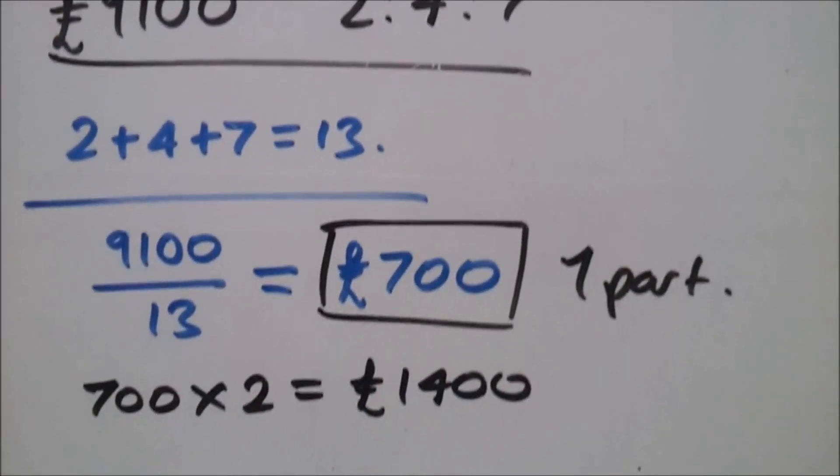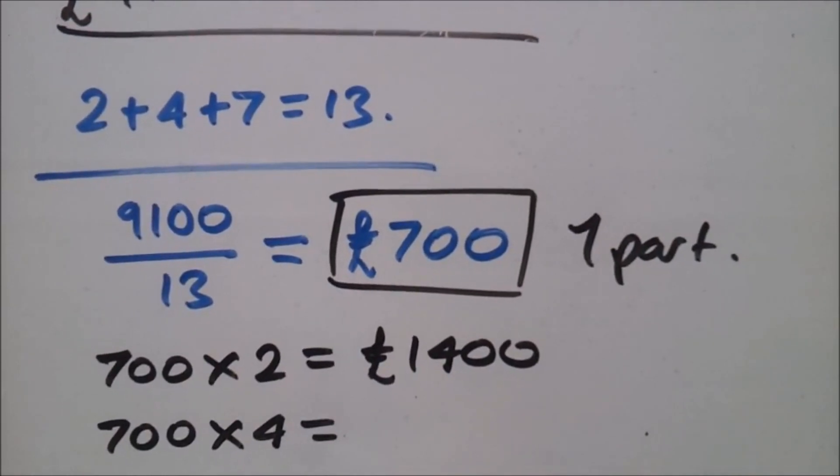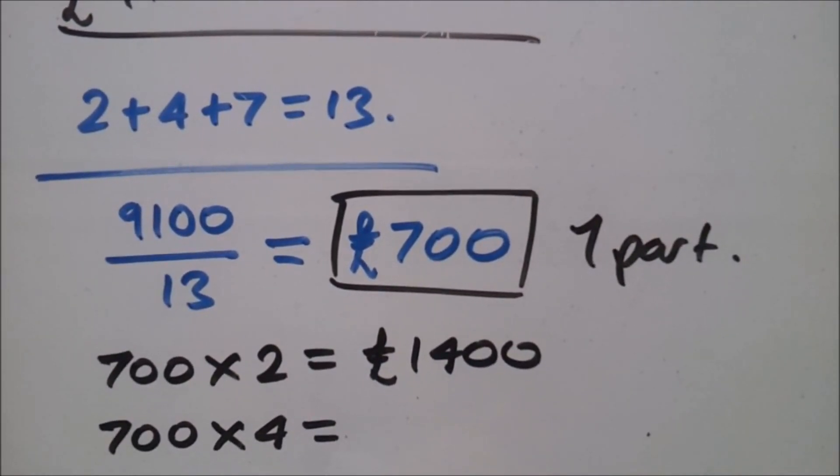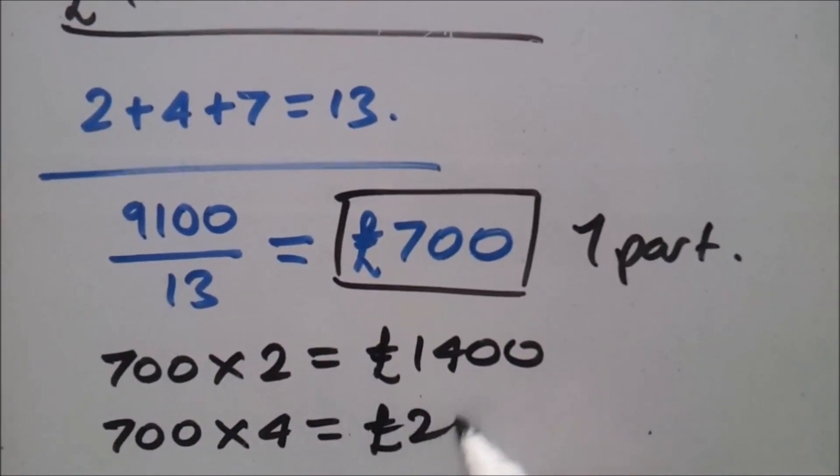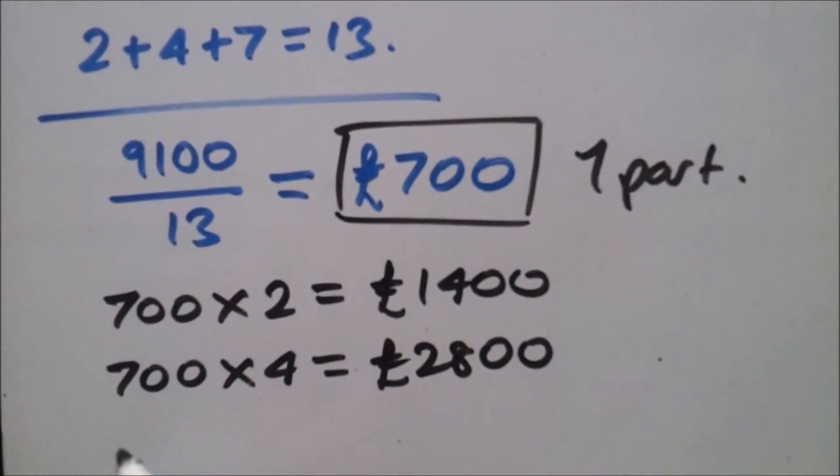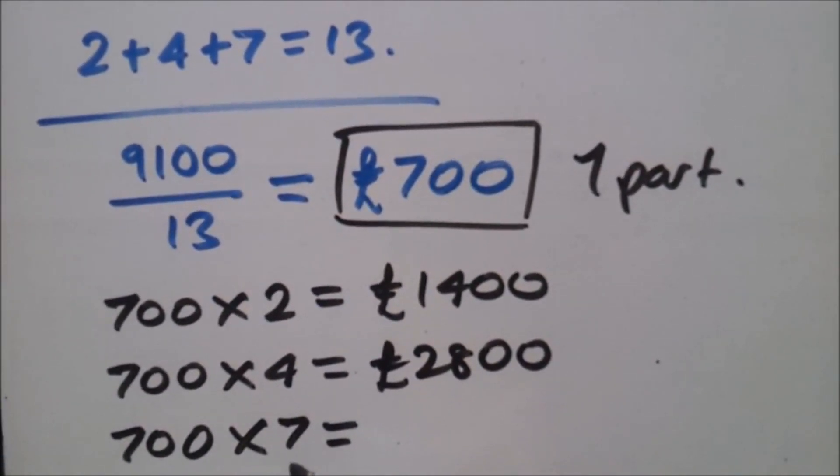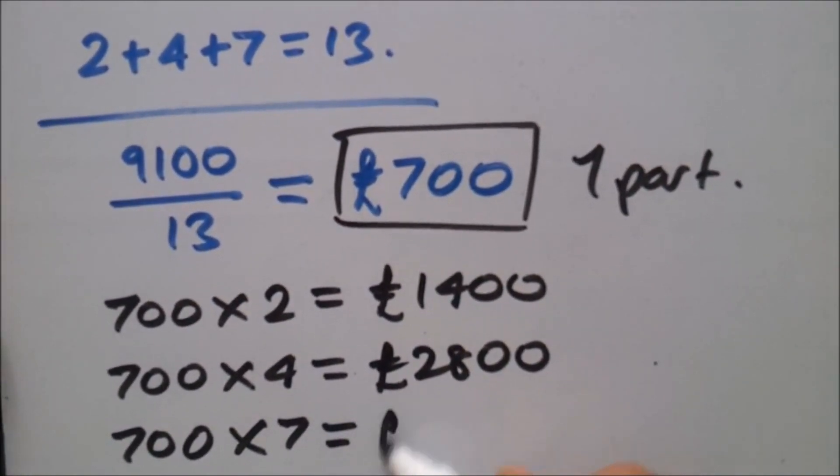Now to find four parts, we do the same thing. 700 times 4 will give you £2,800. Very straightforward, isn't it? And of course, let's just do the last one. So, 700 times 7 should give you £4,900.